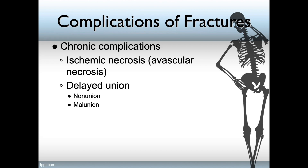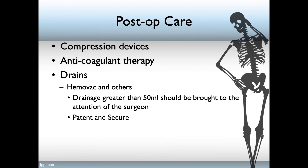After any type of surgical repair of a fracture, post-operative care should include the use of compression devices to prevent DVT, except when one of the lower extremities is involved, and anticoagulant therapy for the same reason. Be aware that your patient will likely have drains, including Hemovacs, and drainage greater than 50 milliliters should be reported to the surgeon. Make sure that pins are secure.